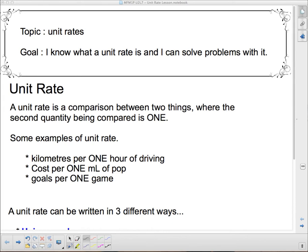So we're going to talk about a unit rate. Unit rate is a pretty straightforward concept. A unit rate is a comparison between two things where the second quantity being compared is one. Some examples of unit rate: kilometers per one hour of driving, cost per one milliliter of pop, goals per one game.